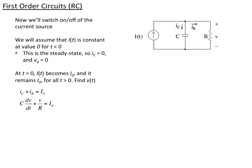Now I can turn things around and have the current source off at first, then turn it on. The source is off at first, so there's no voltage and no current to begin with. When I turn on the source, at this node I have I going in and I_C and I_R going out — that's my node equation. Plugging in the IV characteristics, I get the first-order differential equation: capacitance times the rate of change of voltage, plus voltage over R, equals I₀.